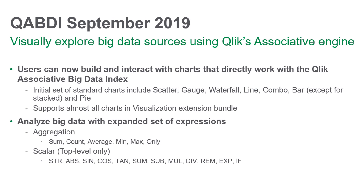The September 2019 release expands the capabilities of our new Qlik Associative Big Data Index to visually explore big data sources using Qlik's associative engine. Users can now use additional charts and an expanded set of expressions. Supported charts now include combo, line, pie, gauge, waterfall, bar, and scatter. Supported expressions include sum, count, average, min, max, multiply, divide, and if. We plan to further extend additional chart support and expressions in future releases.